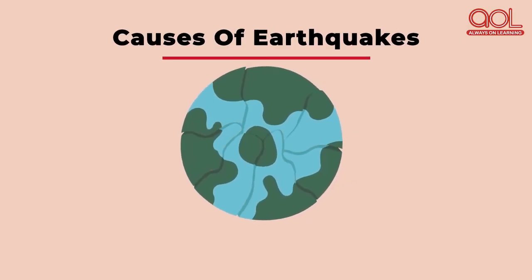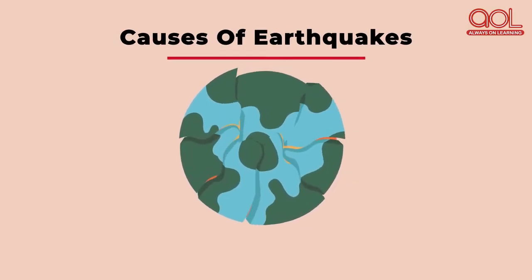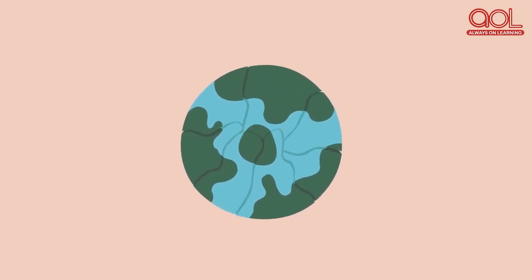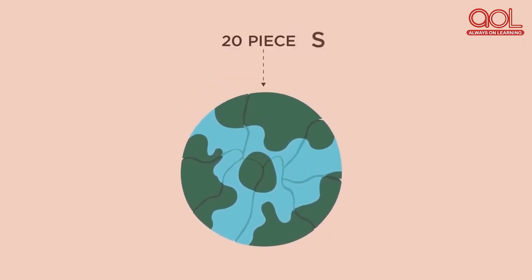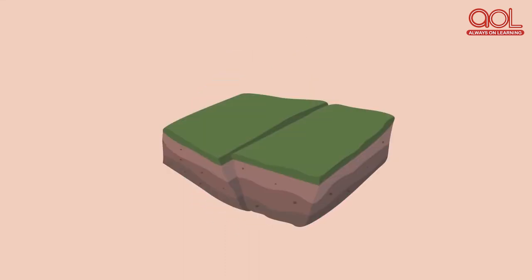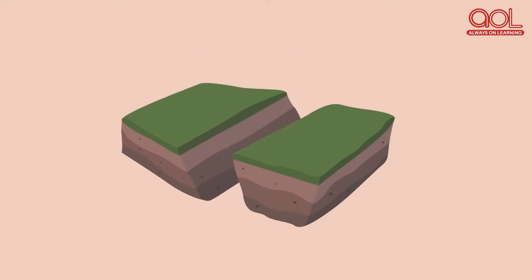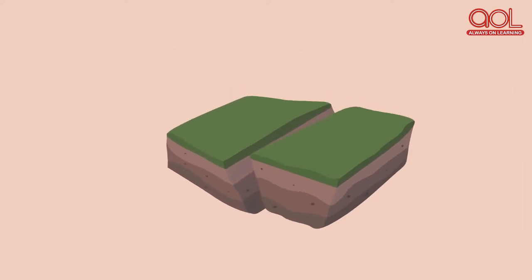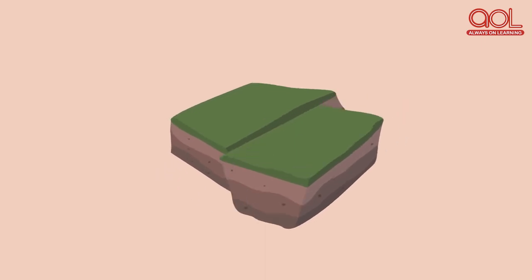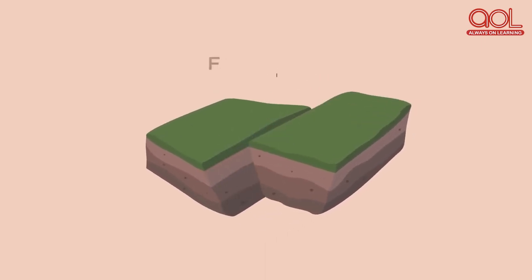The surface of the Earth is like a jigsaw puzzle. The Earth is not a single piece of land but approximately 20 pieces of a puzzle that constantly move — but we cannot feel it because they move quite slowly. Each one of those puzzle pieces is called a tectonic plate. Whenever those plates hit another plate, an earthquake is caused. The surface where these plates slip is called the fault or the fault plane.